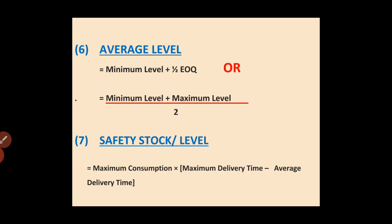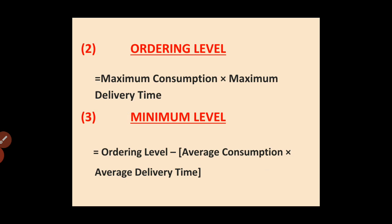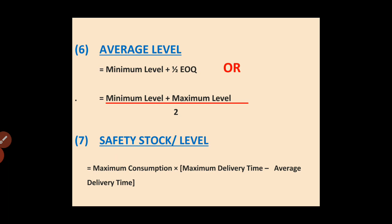To find out the average level, there are two formulas. Number one: minimum level plus one half of EOQ. Number two: (minimum level plus maximum level) upon 2. Generally, in all practical examples, we will use the first formula — average level equals minimum level plus one-half EOQ.